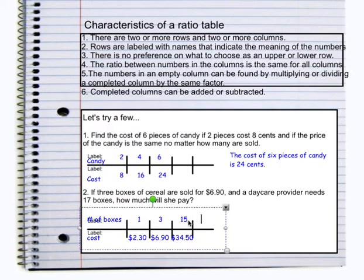17 boxes, I'm going to add to that $34.50 the cost of two individual boxes. So $34.50 plus $2.30 for a 16th box plus $2.30 for a 17th box. That gives me a total cost of $39.10.